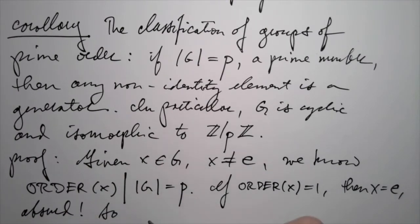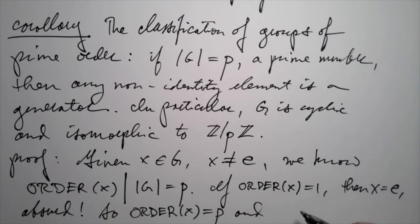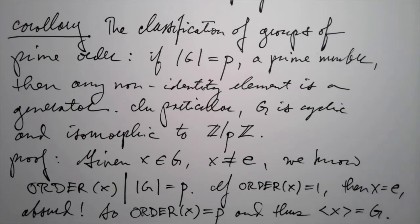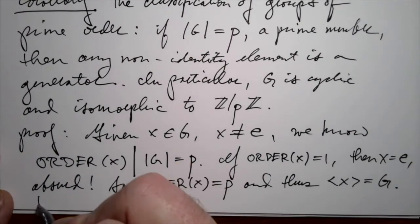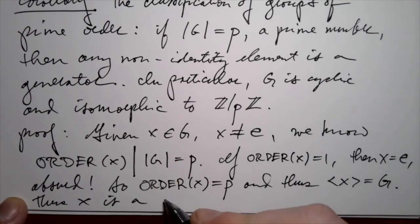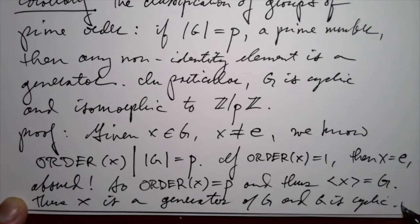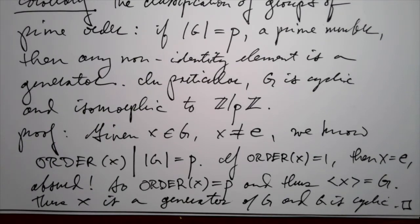Therefore, the order of X must in fact be P. That means, by definition, that the cyclic subgroup generated by X, which has size P, must be the entire group. To say that the order of X is P is exactly to say that this subgroup generated by X has size P. And since G has P elements, those are equal — that's what it means for X to be a generator. Thus X is a generator of G, and in particular G is cyclic. So that proves the corollary: all groups of prime order are cyclic.